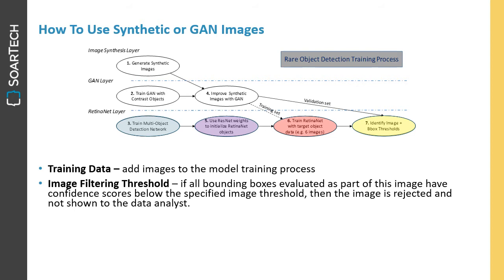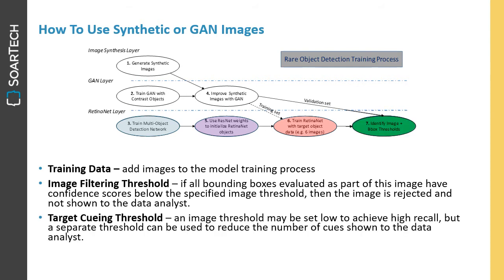Secondly, we may use the synthetic or GAN images as a validation set to estimate an image filtering threshold. If all bounding boxes evaluated as part of an image have confidence scores below the specified threshold, then the image is rejected and not shown to the data analyst. Thirdly, we can use synthetic or GAN images as a validation set for estimating a target cueing threshold. While an image filtering threshold may be set low to achieve high recall, a separate threshold can be used to reduce the number of cues or bounding boxes shown to the data analyst.